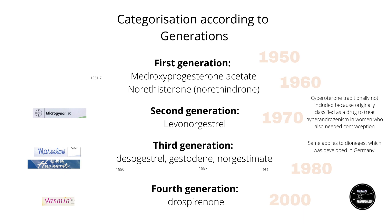There are two different categorization systems for progestins: one according to generations, and the other according to chemical structure. The generational system is according to when they were synthesized. The first-generation progestins include medroxyprogesterone and norethisterone, also known as norethindrone. Medroxyprogesterone has many different uses — as a contraceptive it is mostly seen as the Depo-Provera injection. Norethisterone is also used in oral contraception, but has mostly been superseded by levonorgestrel and newer formulations; it is still often used to stop bleeding and to restart menstrual cycles.